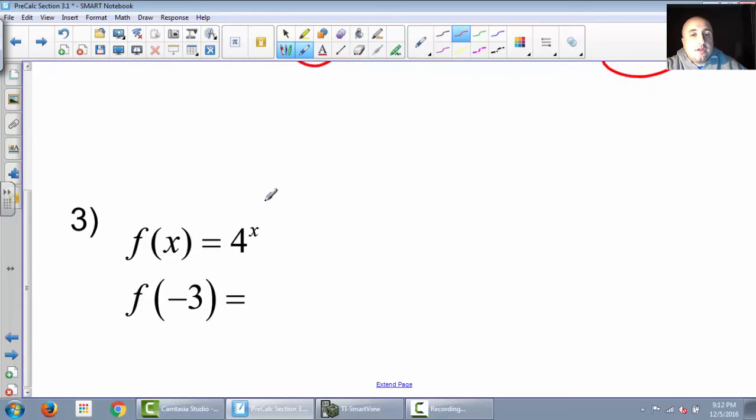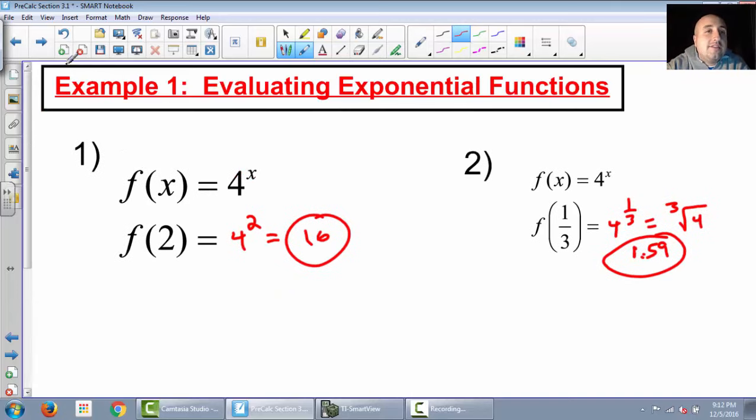And then down here at the bottom, we have another one. It's f(x) equals 4 to the x still. And our new x is negative 3. So 4 to the negative 3. That equals 1 over 4 to the positive 3 based on exponent rules. And that would be 4 times 4 times 4, which is 64. So 1 over 64 would be our answer. So pretty easy to evaluate. That's pretty much Algebra 2 or Algebra 1 info.